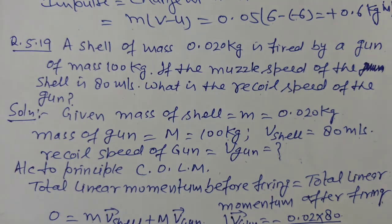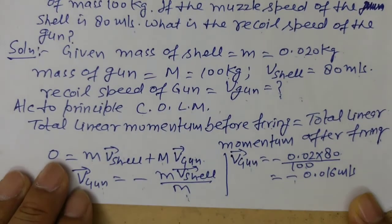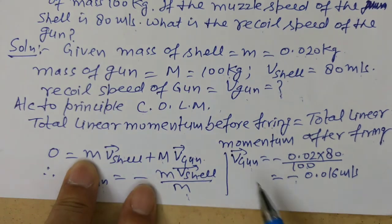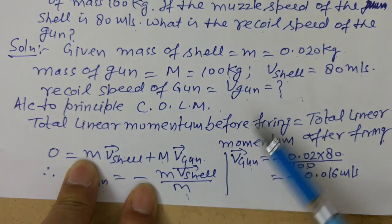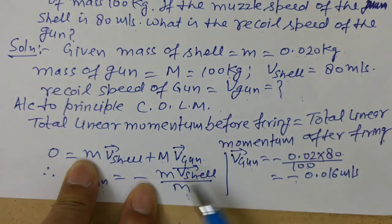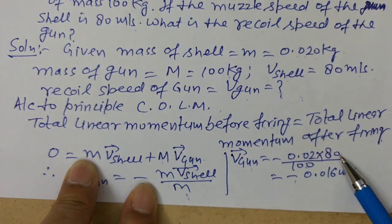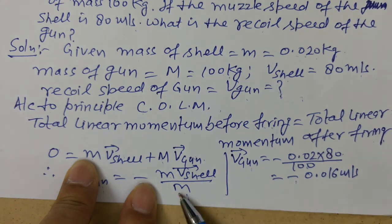We need velocity of gun. Therefore, V gun equals minus m times v shell upon capital M. Putting values: V gun equals minus 0.02, the mass of the shell, times 80, the velocity of shell, divided by capital M, mass of the gun, which equals 100.